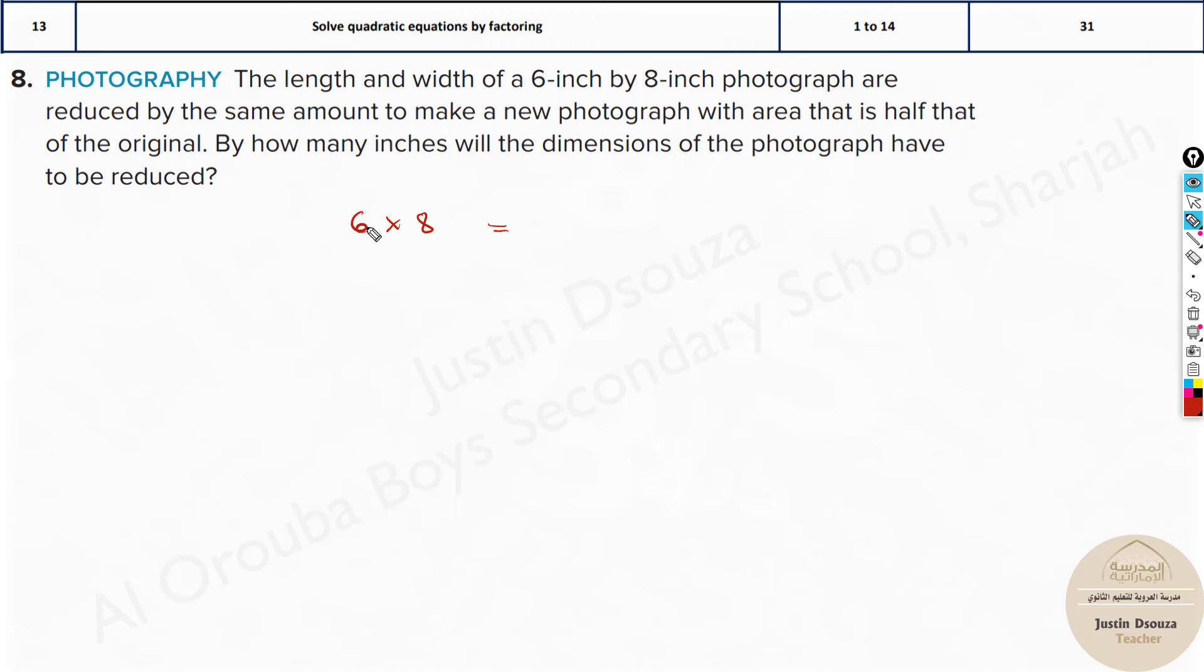Let's find the area: 6 times 8 is 48. The new dimensions are reduced by a certain amount. Let us take that as x. So it will be 6 minus x and 8 minus x. Both are reduced by the same amount and the area is half of this. 48 half is 24.